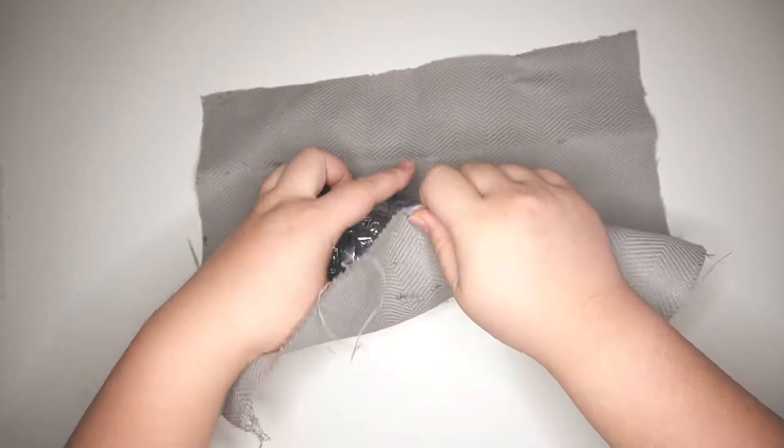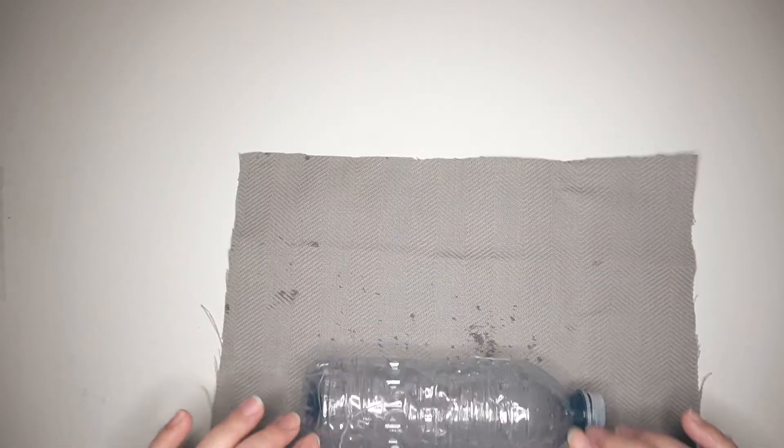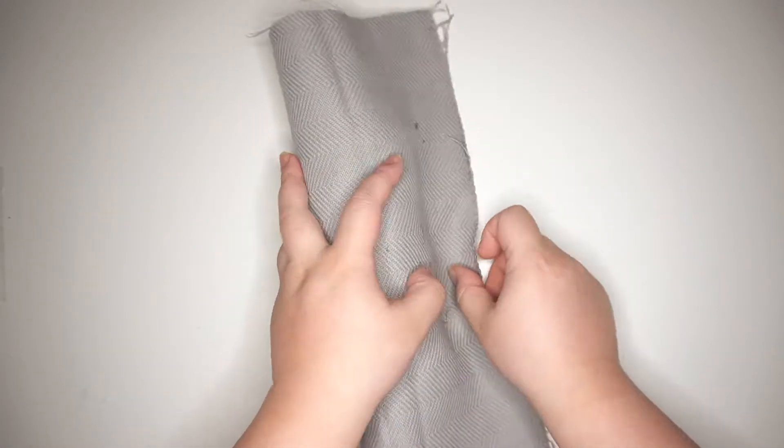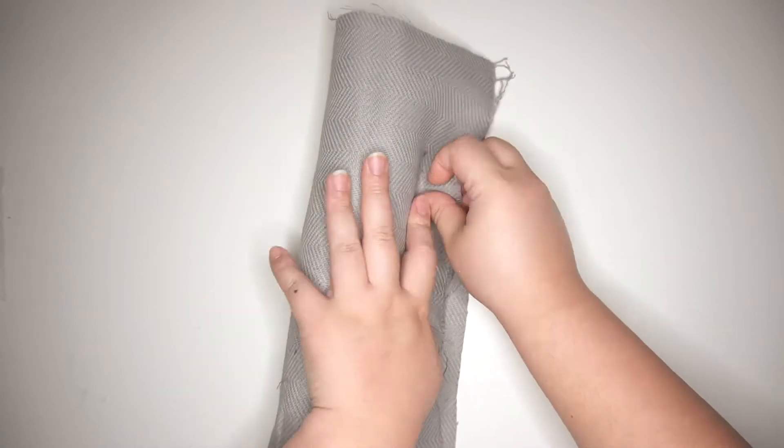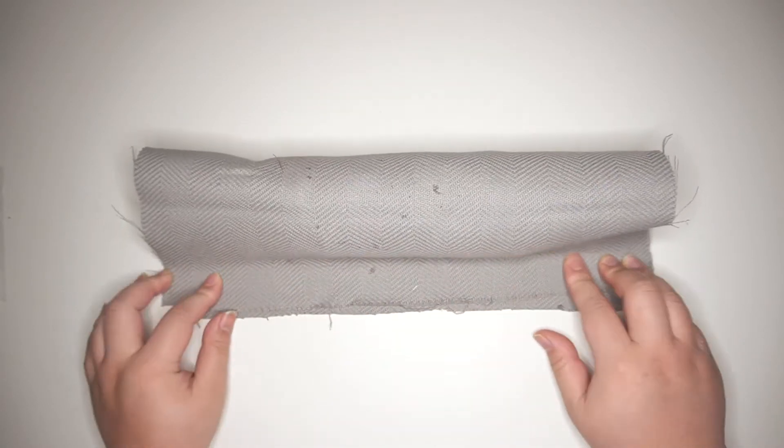For the larger version of this toy with the entire water bottle, I measured the height of the water bottle and made sure to leave a large seam allowance for sewing and made sure the width is enough to wrap around the bottle as well.